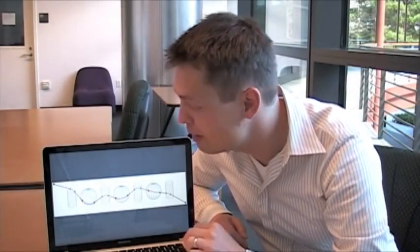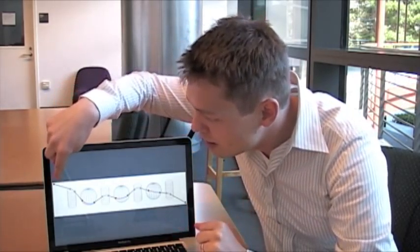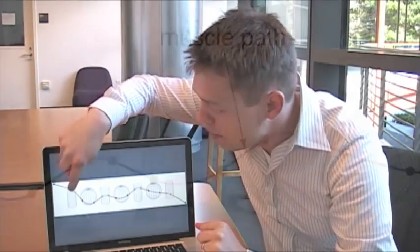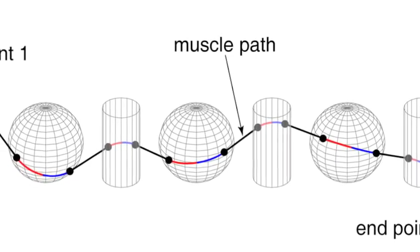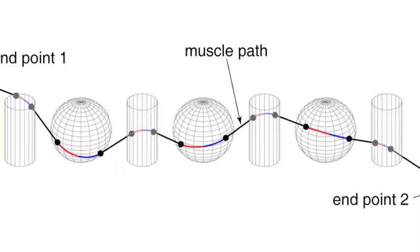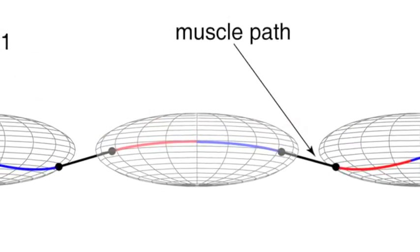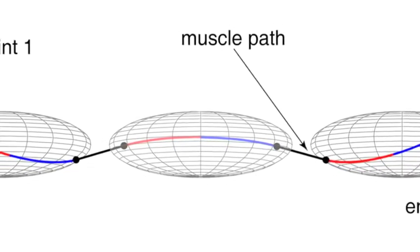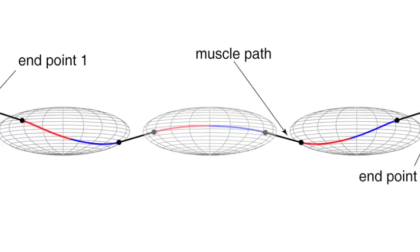This is an example muscle wrapping solution for a large number of surfaces that would represent intermediate bones that a muscle wraps around. We start at the insertion point of the muscle and find the path of the muscle as it smoothly wraps around all of the intermediate cylinders and sphere surfaces. Here you can see we can wrap around a large number of simple shapes. We can also wrap around more complex shapes like ellipsoids, with a smooth path wrapping around three ellipsoids.